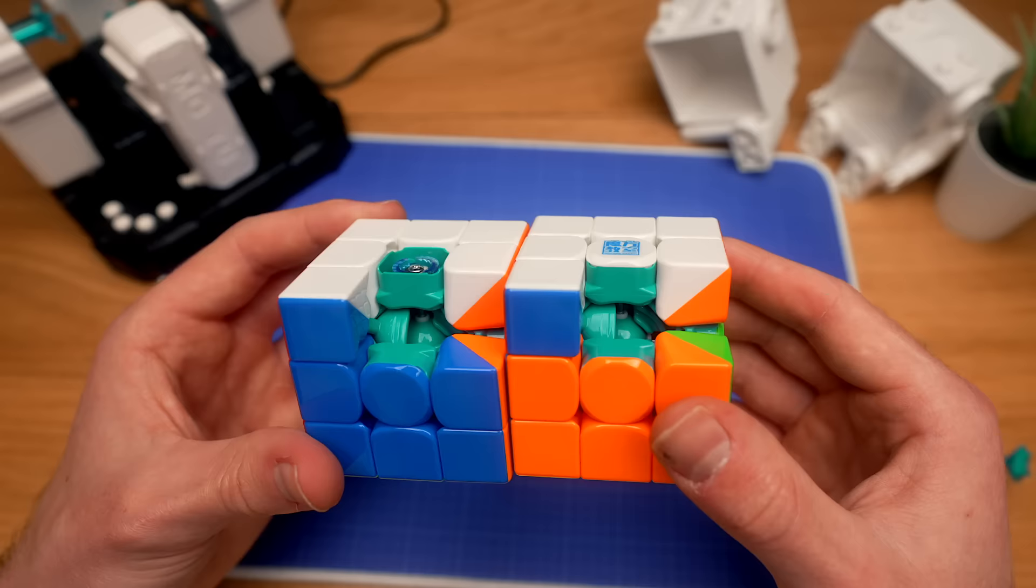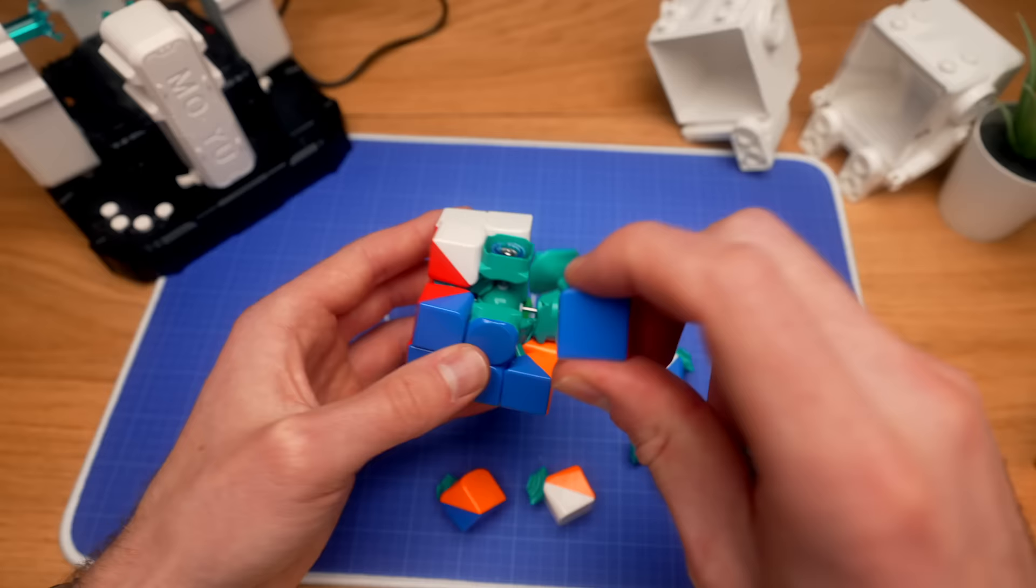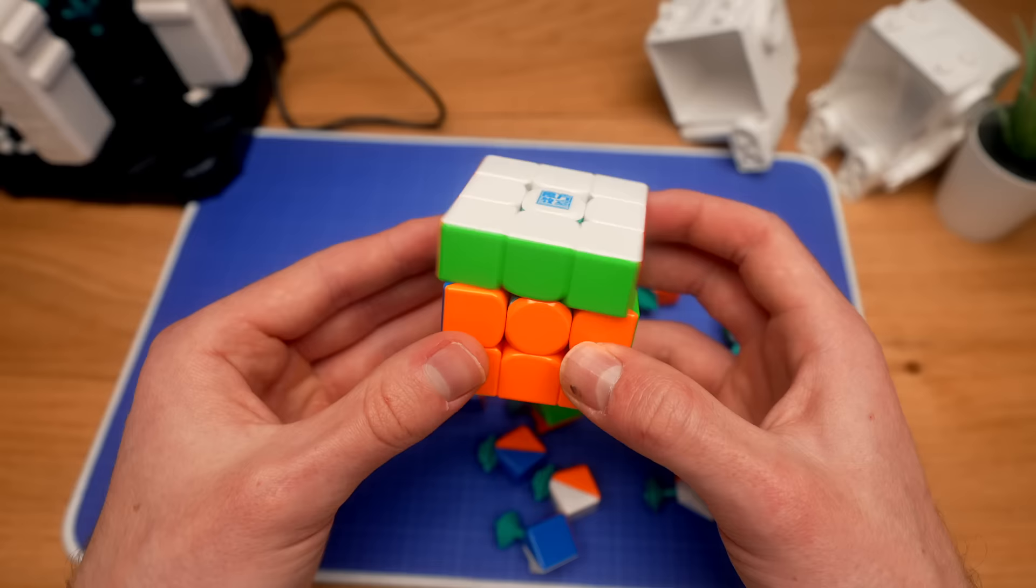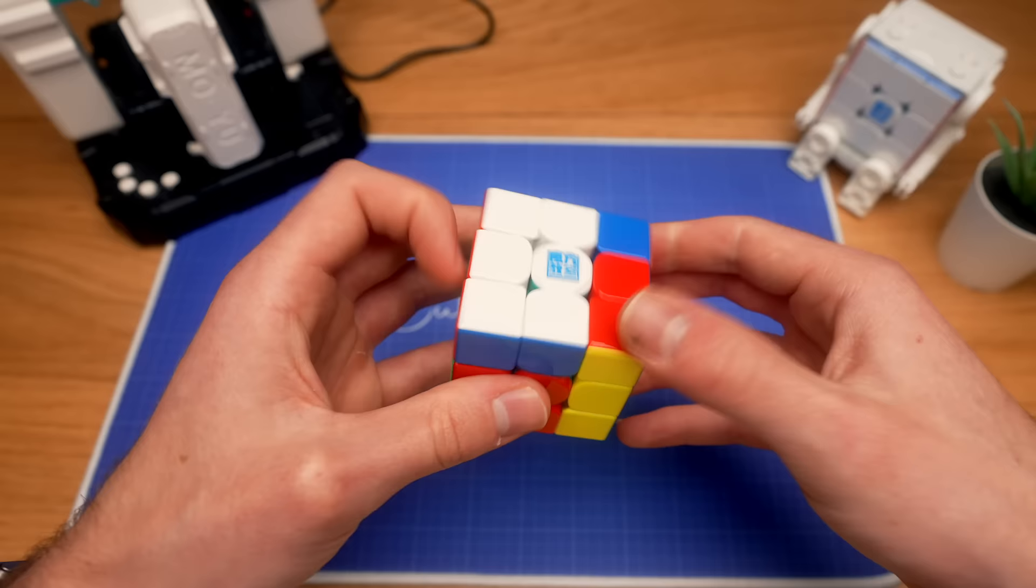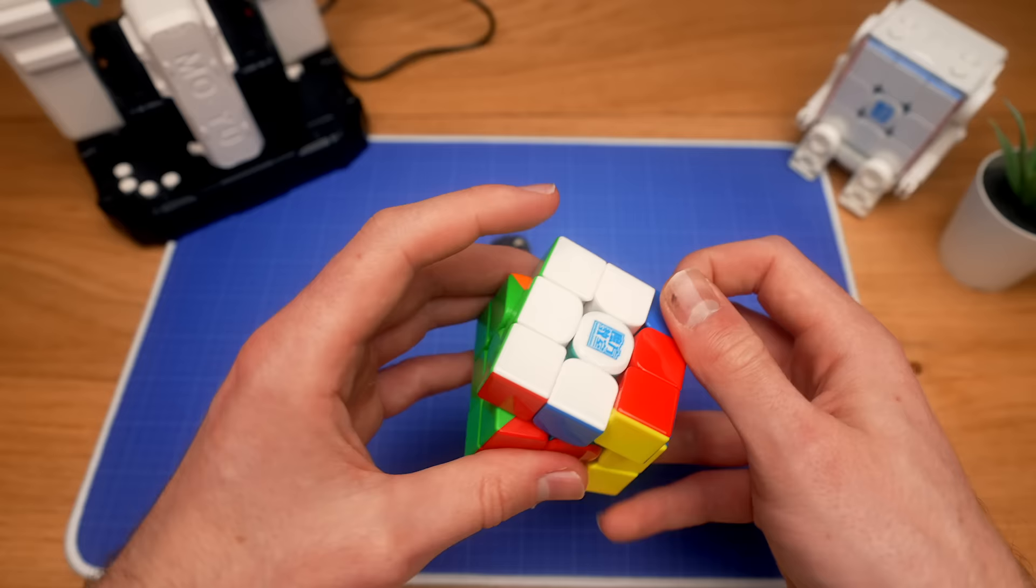So the two cubes are identical. And as you can see from the ball inside, it does have core magnets, which helps align the cube better when you're turning. First turns. Okay, that feels really good for a $25 cube. It actually reminds me of another cube. Wait a second.